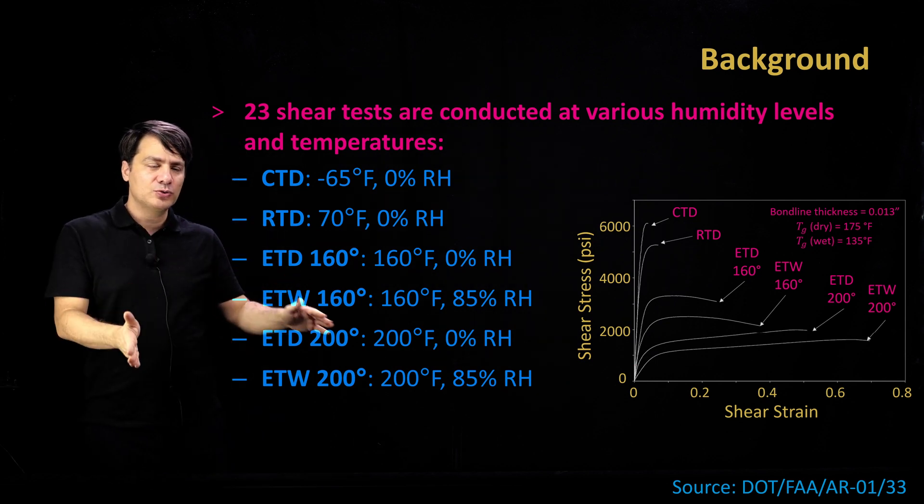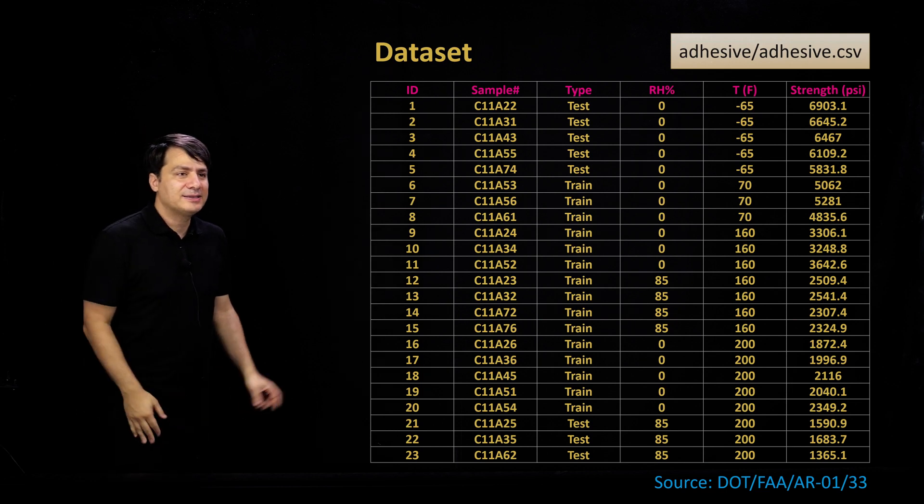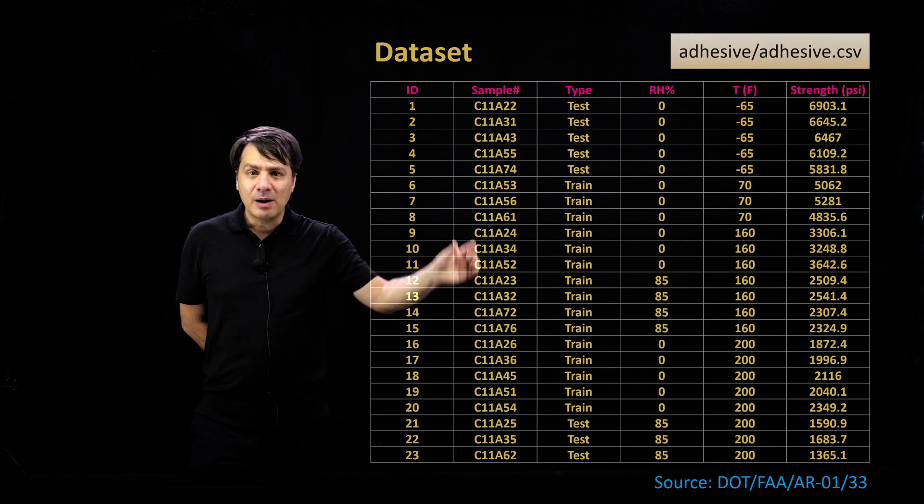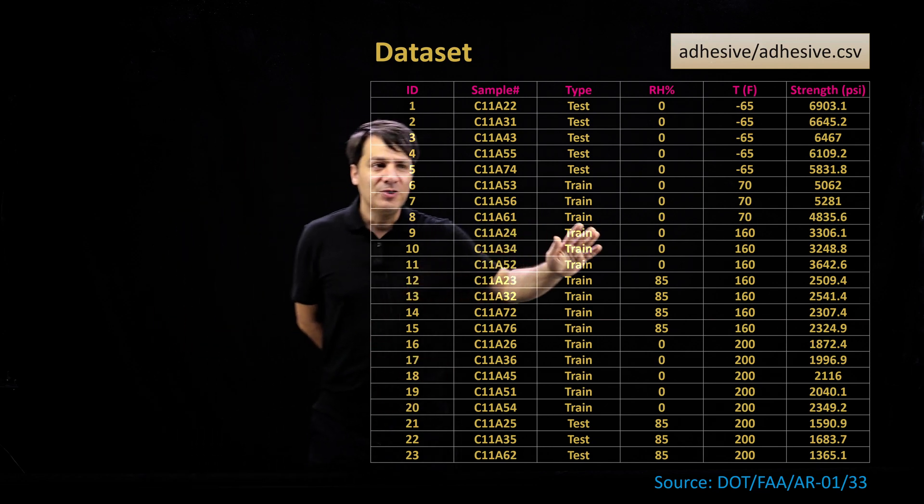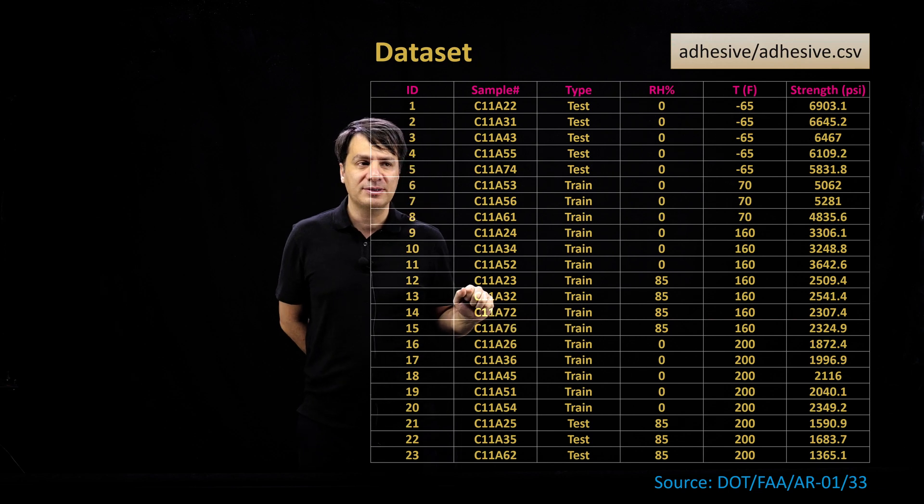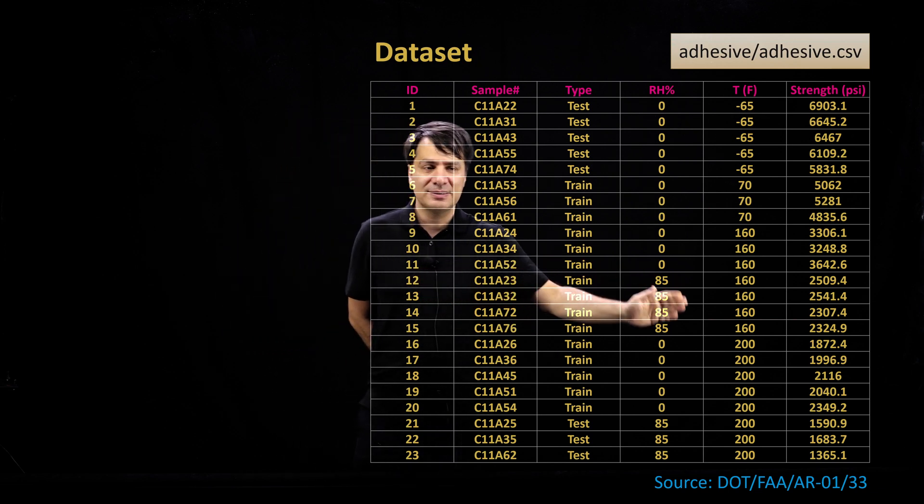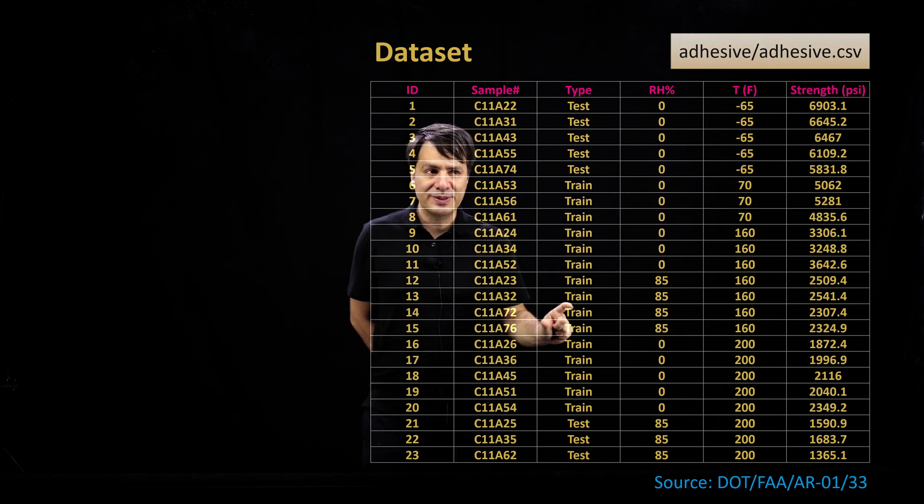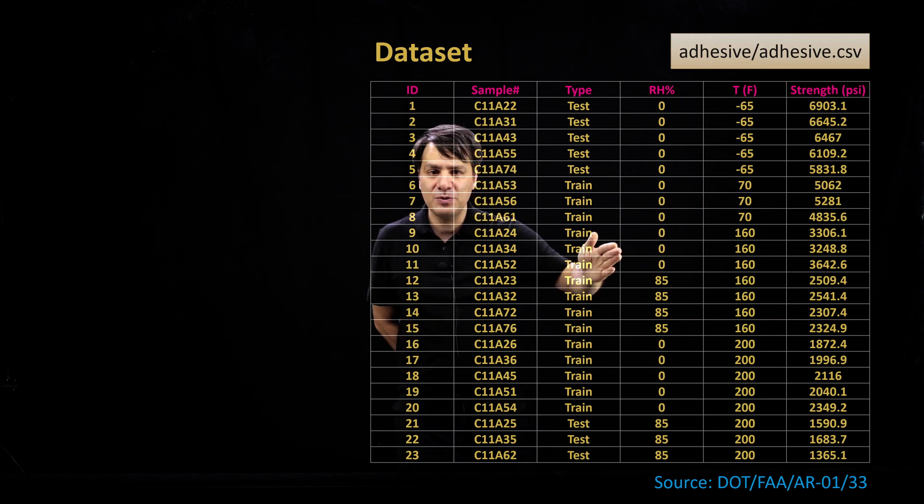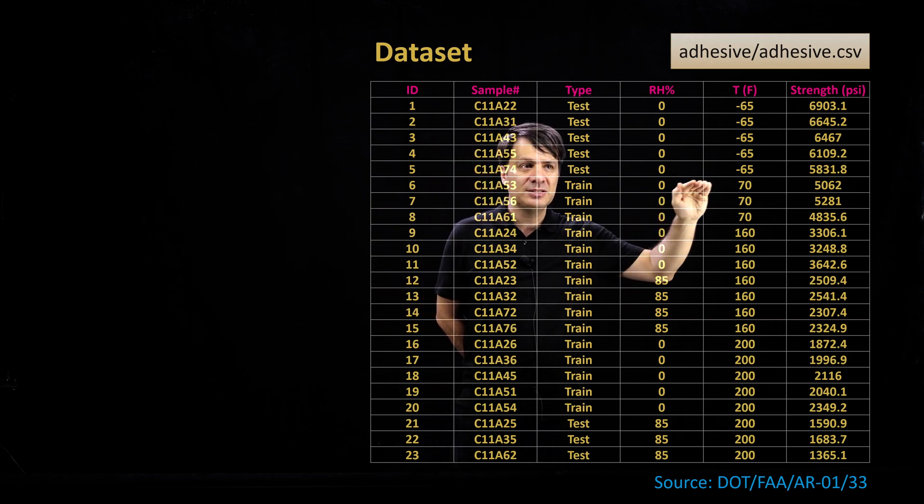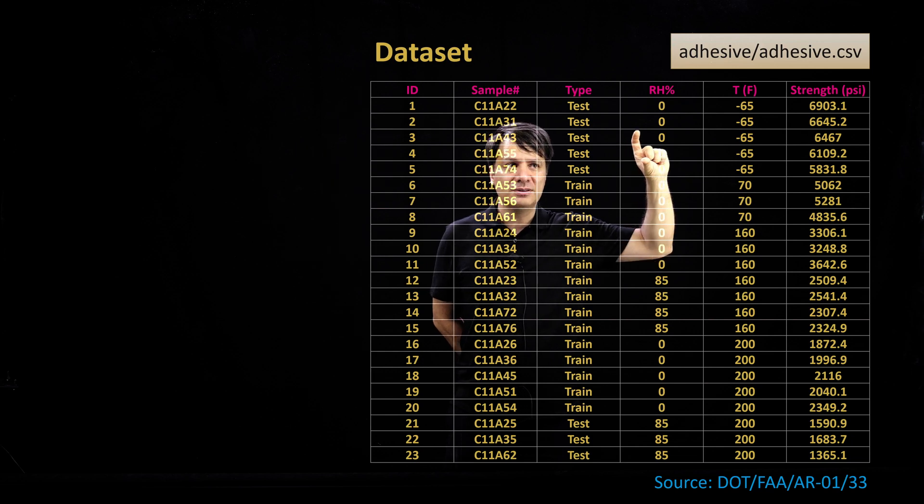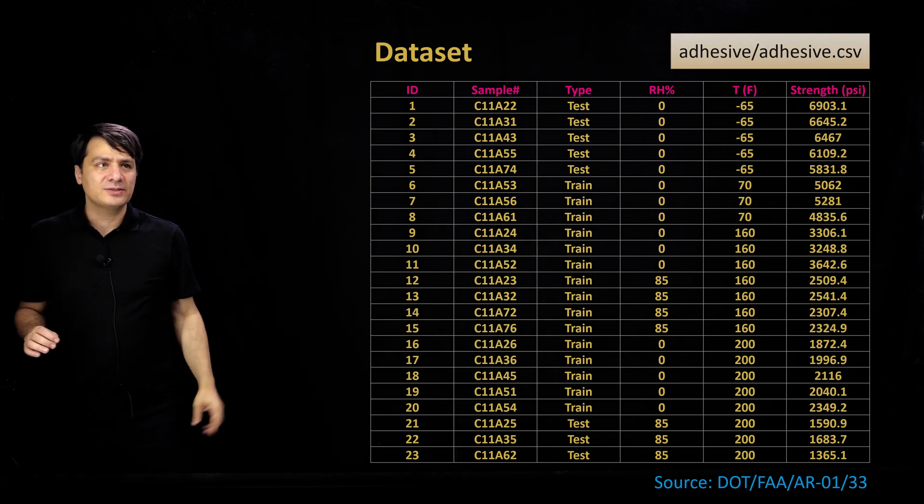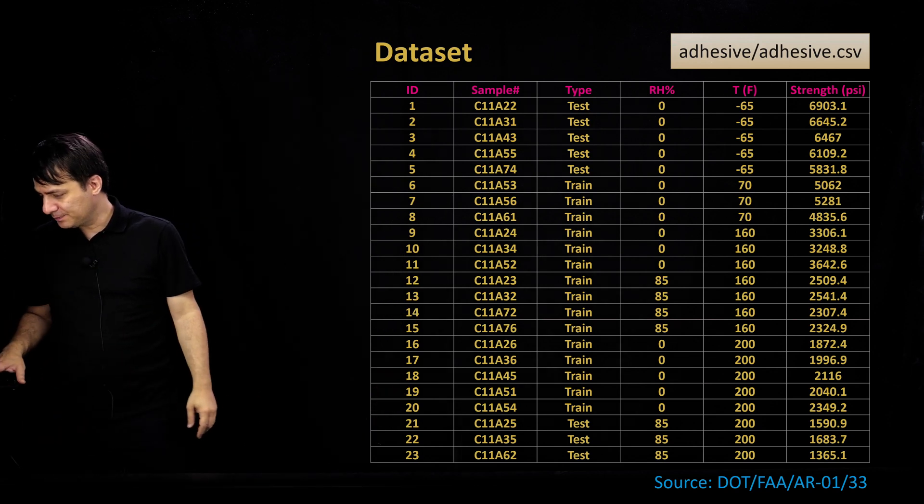So with this, let's go through the case study. A CSV file has been provided for you, 23 columns. The sample number which is given in the FAA documents, and then we are dividing it either into test or training. What is important for us is the relative humidity and the temperature of the test, and we are trying to predict the strengths as a function of relative humidity and temperature. But again, there are repeats of each condition. You can see the first condition has five repeats, all 0% relative humidity and minus 65°F.